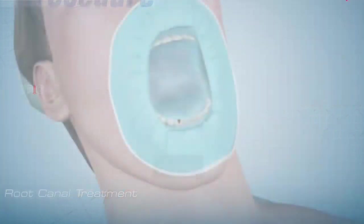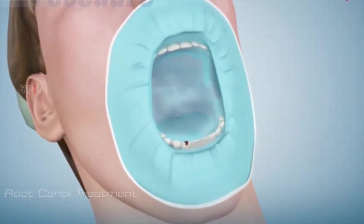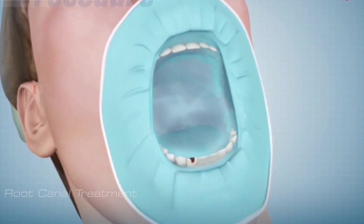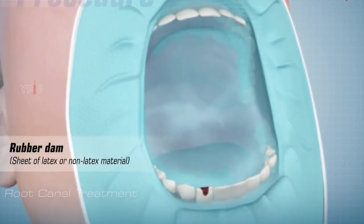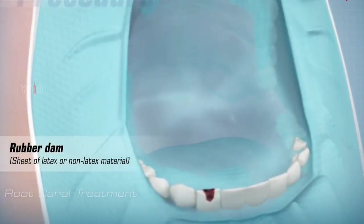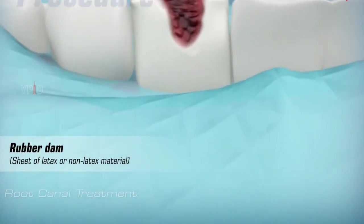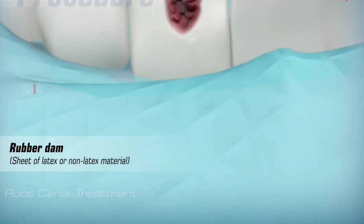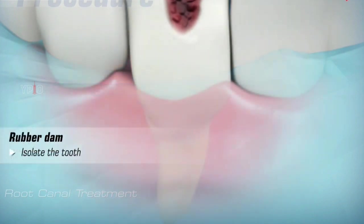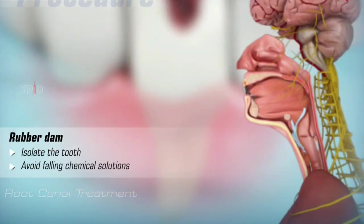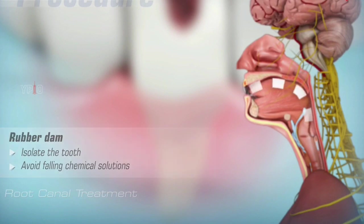Next, to keep the area dry and free of saliva during treatment, a rubber dam is placed around the tooth. The rubber dam is a sheet of latex or non-latex material. Its main function is to isolate the tooth being treated and also to keep the different chemical solutions from falling to the back of the throat.